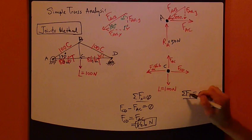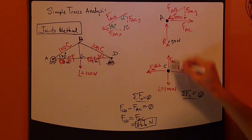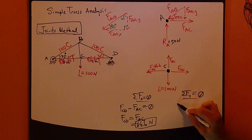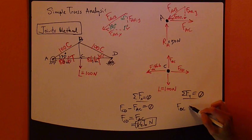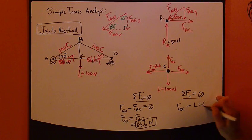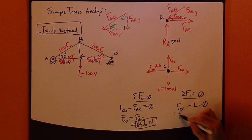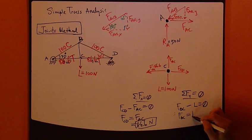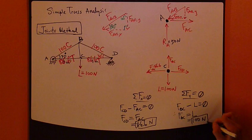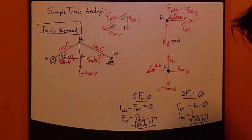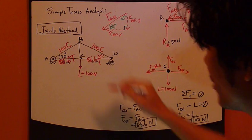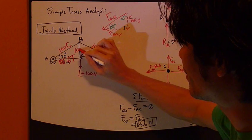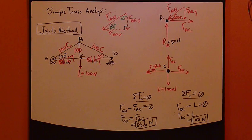What about this guy right here? FY. So only these two guys in the Y direction. So FBC minus L equals zero. So FBC equals L. L is 100 Newton. Therefore, FBC is 100 Newton. There we have it.